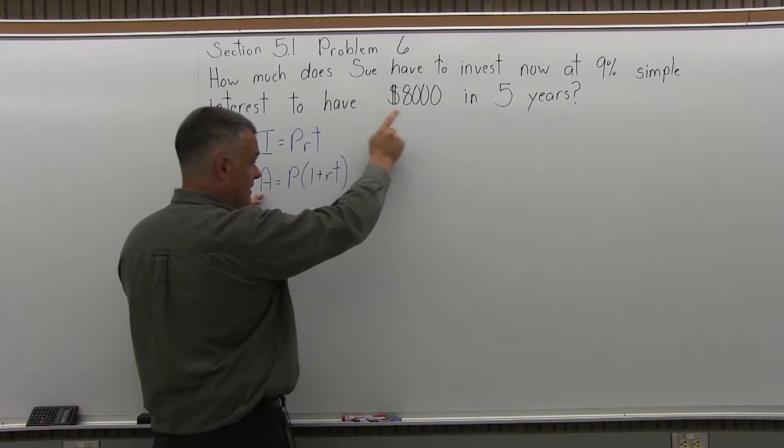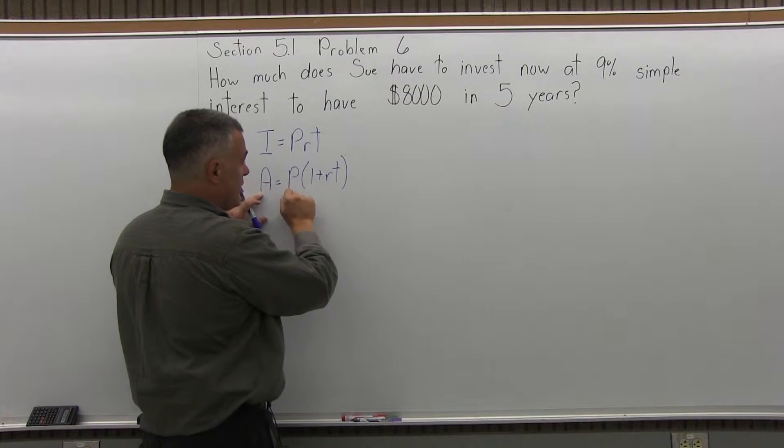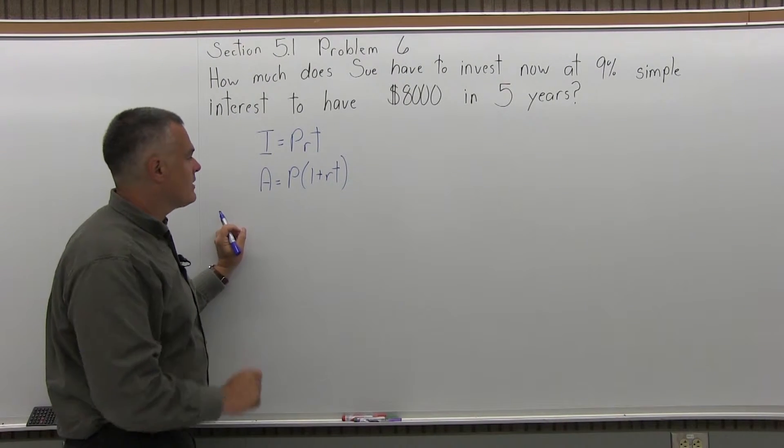I know the A, the A is the final amount, it's $8,000. I know the rate, I know the time, the only thing I don't know is the P. Now I can do it.